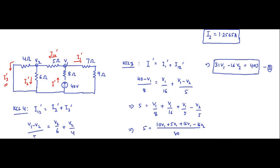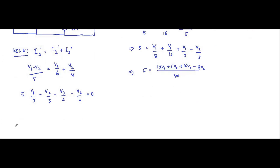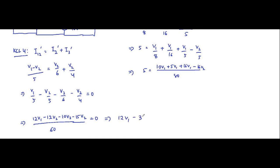i2 dash is V2 divided by 6, and i3 dash is V2 divided by 4. Rearranging: V1/5 minus V2/5 minus V2/6 minus V2/4 equals 0. The common multiple is 60, giving 12V1 minus 12V2 minus 10V2 minus 15V2 equals 0, which simplifies to 12V1 minus 37V2 equals 0. This is equation 4.